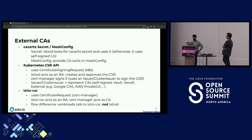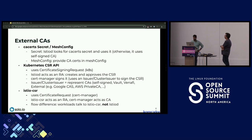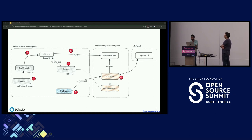For external CAs, we can use cert-manager, which helps with certificate issuance tied to the Kubernetes certificate signing request resource. This means we no longer have to depend on Istiod — we leverage cert-manager instead. The next slide shows an elaborate flow diagram of cert-manager, Istio CSR, and how everything flows when you have Istio CSR in place.